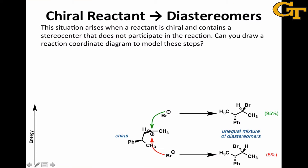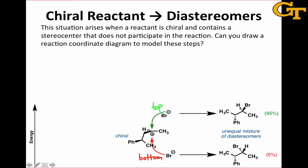What happens when we start with a chiral reactant and arrive at diastereomers? Let's think about a reaction coordinate diagram for the two possible pathways shown in green and red, corresponding to top face attack (green) and bottom face attack (red). What we observe in practice is an unequal mixture of diastereomers — 95% and 5%. Evidently, attack on the top face takes place much more rapidly, or to a much larger degree, than attack on the bottom face.